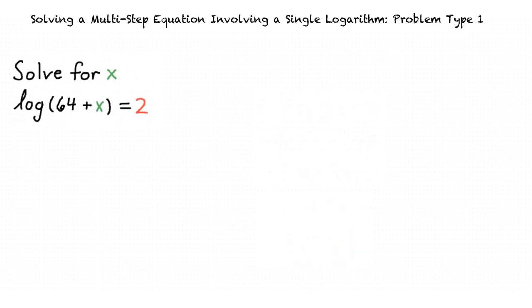Here, we have a problem asking us to solve for x in the logarithm of 64 plus x equal to 2. Wait, but this logarithm does not have a base like the other logarithm did. That's right.